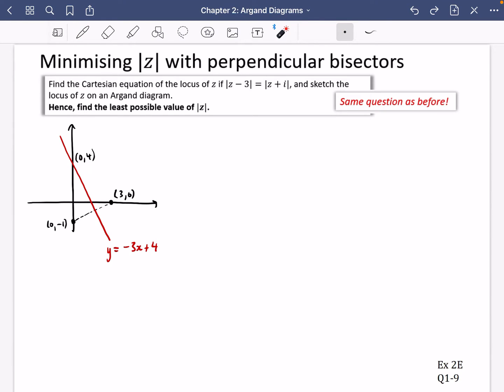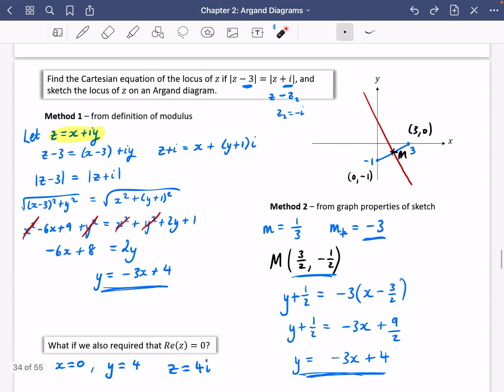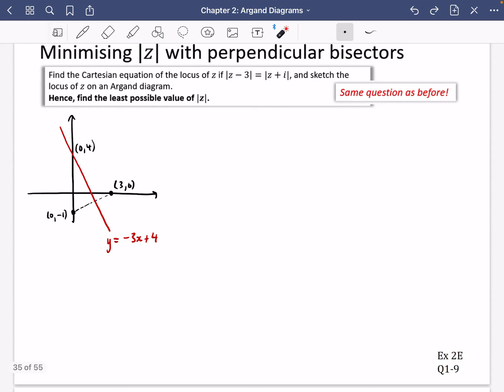So we're going to do a bit of problem solving, and it's another minimizing of the modulus of z. And what we're going to do is the exact same question that we've done before. So this is just from up here. I've literally drawn this diagram again, and I've taken the equation of the line from the previous part that we've got here.